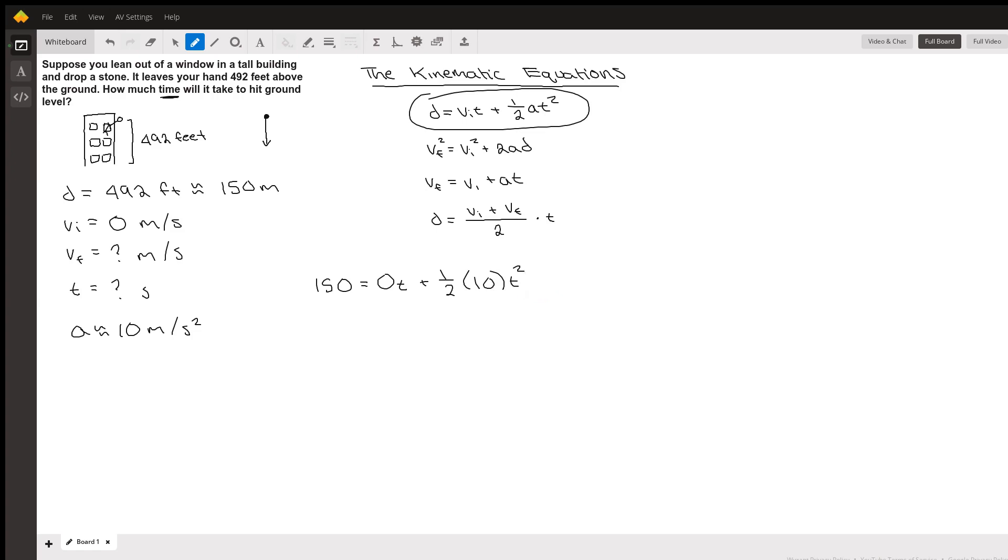Then we get 150 equals one-half times 10 t squared, which equals 5 t squared. If we divide this 5 over, we have t squared equals 15. We can take the square root of t, and we can see that t equals the square root of 15 seconds.